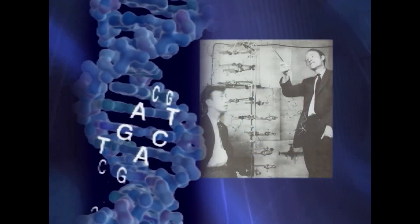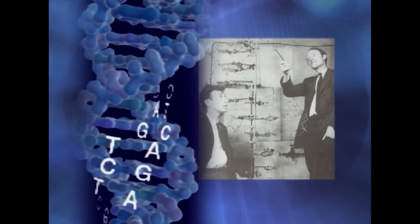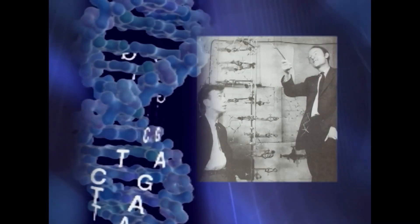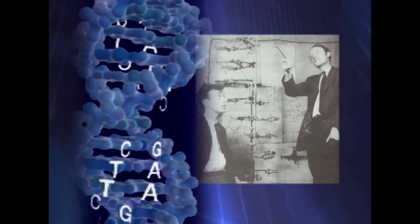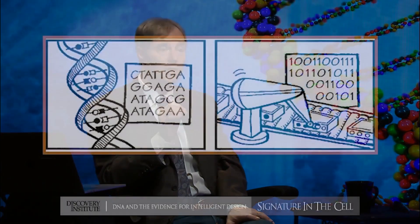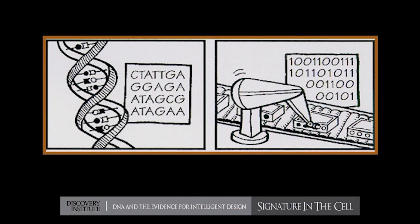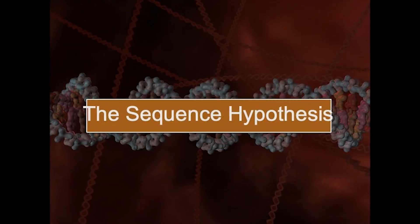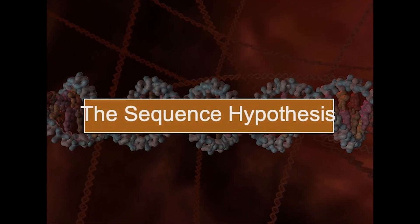...that the subunits of the DNA molecule that run down the interior of the spine are functioning like alphabetic characters in a written language, or like digital characters — like the zeros and ones in a section of software code. This was known as the sequence hypothesis, and it was later confirmed. It essentially says that the DNA molecule performs a function.